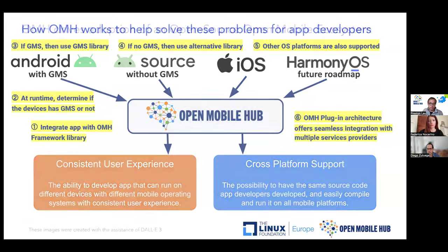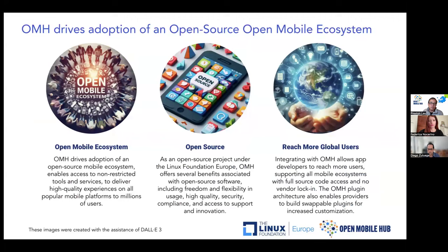Inviting the open source community to contribute plugins gives developers more choices and flexibility. The three major benefits of Open Mobile Hub are: first, it's open source — the entire code base is on GitHub, offering flexibility, freedom, quality, security, and compliance. Second, the open mobile ecosystem provides non-restricted tools and services delivering high quality experience on all mobile platforms. Third, reaching more global users — integrating with OMH opens access to a variety of services regardless of GMS, non-GMS, or other platforms, without vendor lock-in.